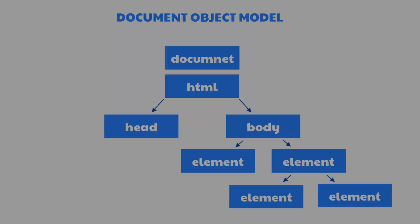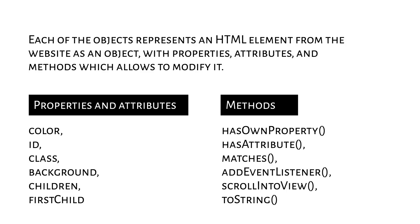Here on the screen you can see examples of properties, attributes, and methods. For example, a div element can have color, ID, class, background, and can also have children, first child, last child. Those elements may also have methods which we can use to modify them — methods like setAttribute, matches, addEventListener, scrollIntoView, toString, and many more which you can find easily on the internet.